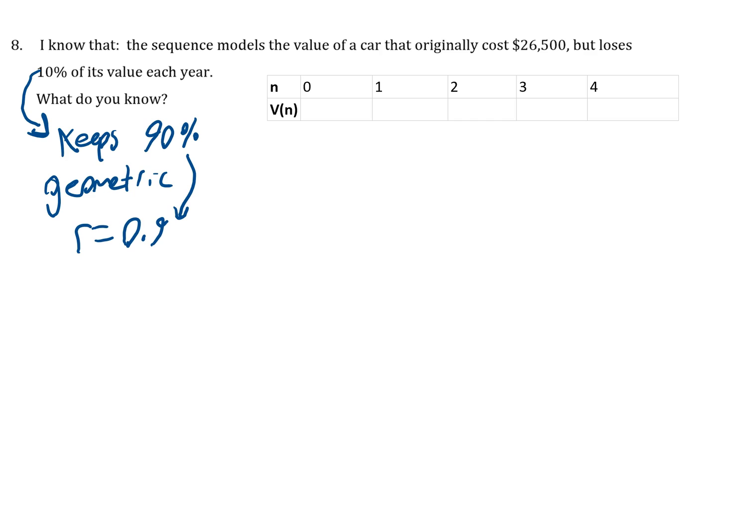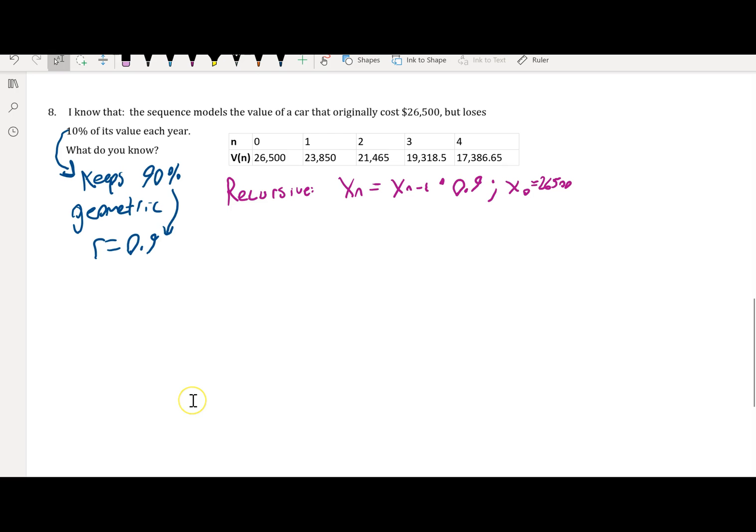To fill in the table, I can use the recursive rule: x_n = x_(n-1) times 0.9, starting at x_0 = 26,500. So we can fill in the table using that rule. Just starting at 26,500 and multiplying by 0.9 every time, we get this table of values that you see here.